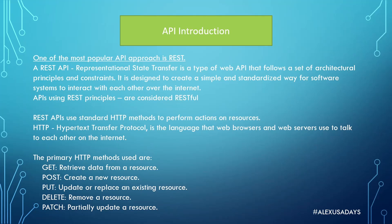The primary HTTP methods used are: GET, which allows the client to retrieve data from a server; POST, which allows you to create new data on the server — a new resource; PUT, which allows you to update or replace an existing resource; DELETE, which allows the client to delete something from the server; and PATCH, which allows you to partially update a resource. So if you don't want to completely replace all the information but want to update part of it, you'll send a PATCH request from your client to the server.